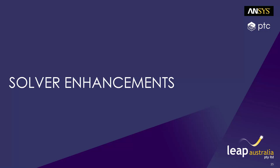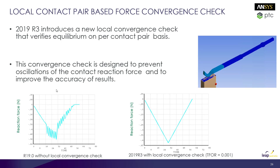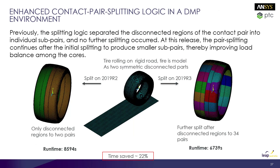Moving on to core solver enhancements. This release saw the introduction of a new local convergence check to help users tackle difficult nonlinear problems. This convergence check is designed to prevent oscillations of contact reaction forces and improve accuracy, by checking forces of the current iteration against the previous iteration and verifying the difference is smaller than a user-defined convergence tolerance. Compared to the R190 release, the new release shows a significant improvement in reaction forces with increment in time.